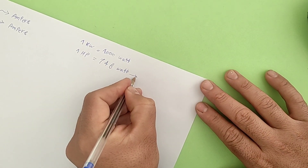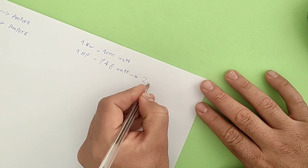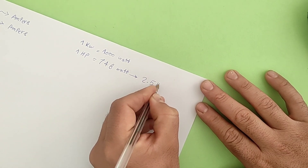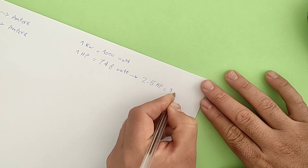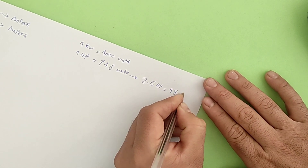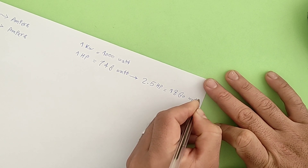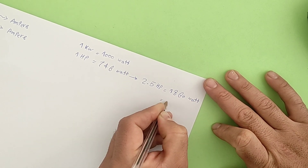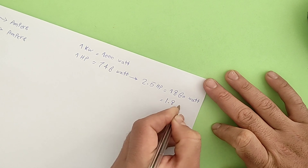For example, 2.5 horsepower equals 1860 watts, or 1.86 kilowatts.